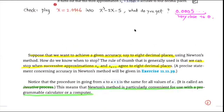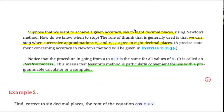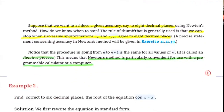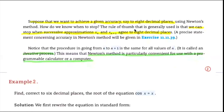In Newton's Method, how do we know when to stop? The rule of thumb is that we stop when successive approximations xₙ and x_{n+1} agree to 8 decimal places. A precise statement on accuracy is given in exercise 11.11.39. Note that the procedure going from n to n+1 is the same for all values of n — it is called an iterative process. This means Newton's Method is particularly convenient for use with a programmable calculator or computer.